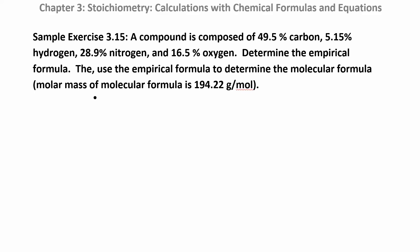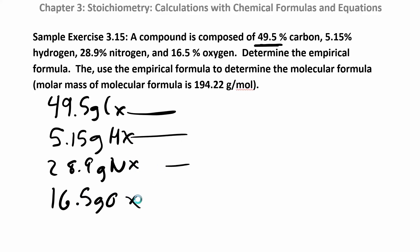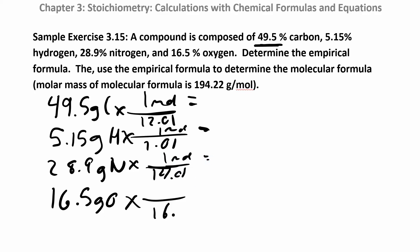Let's try one more problem: use mass percents to find the empirical formula, then use the molar mass of the molecular formula to find the molecular formula. Step one: assume a 100-gram sample so all percents become grams. We have 49.48 grams of carbon, 5.15 grams of hydrogen, 28.9 grams of nitrogen, and 16.5 grams of oxygen. Now divide by their molar masses: 12.01, 1.01, 14.01, and 16.